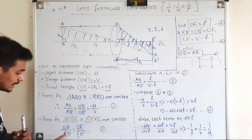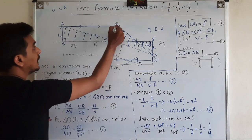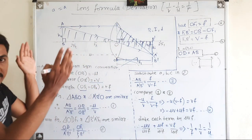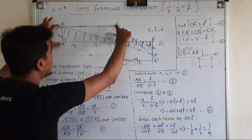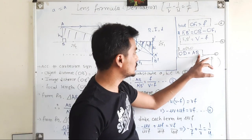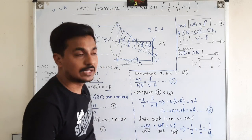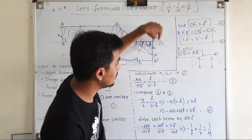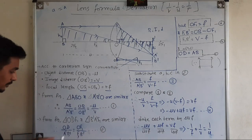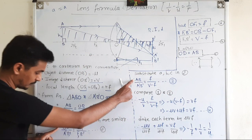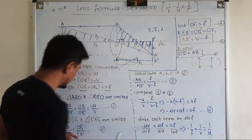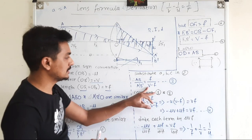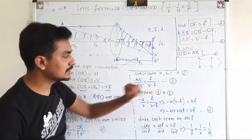Also, OD — this is an imaginary line — is part of a rectangle. The two opposite sides of a rectangle are equal, so OD equals AB. Now I substitute all these into equation 2: instead of OD I put AB, instead of OF1 I put F, and instead of F1B' I put V minus F. This gives us equation 3: AB / A'B' = F / (V − F).